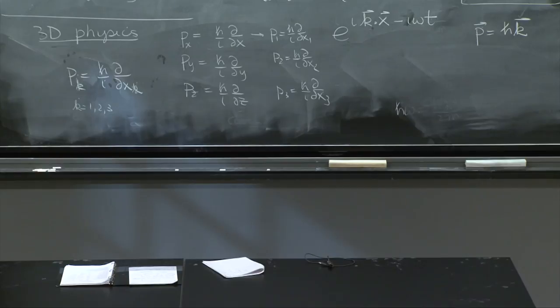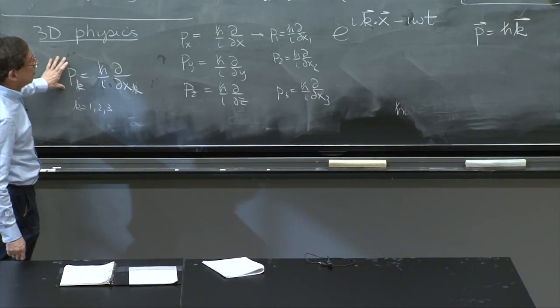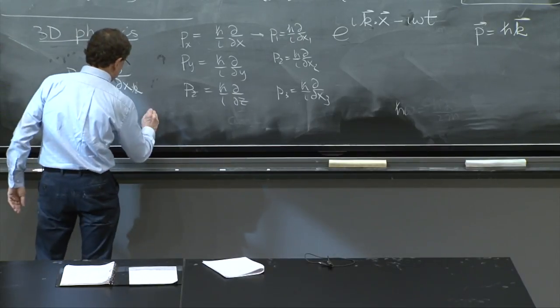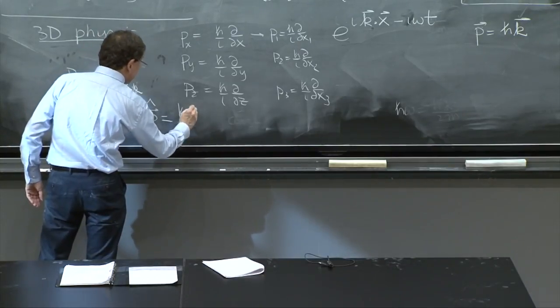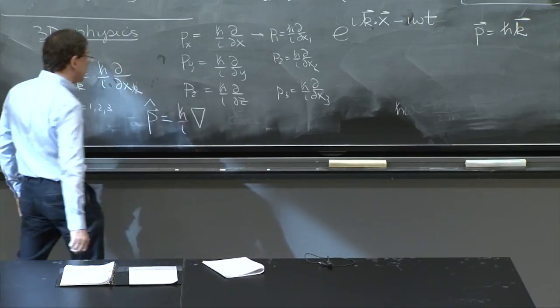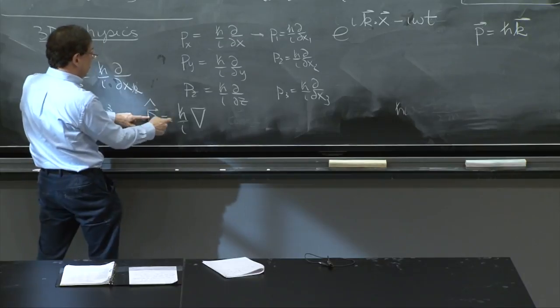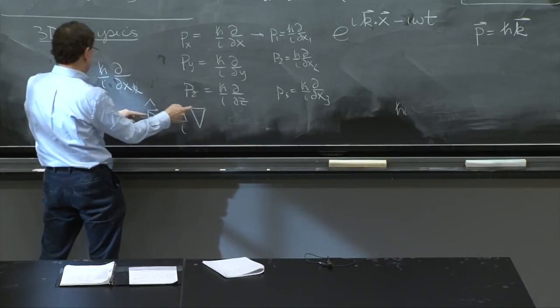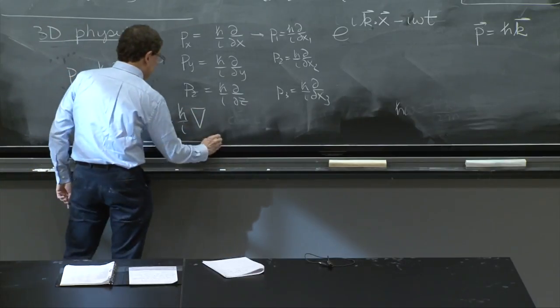So that's the momentum, there are three momenta. There are three coordinates. In vector notation, the momentum operator would be h bar over i times the gradient. You know that the gradient is a vector operator, because d dx, d dy, d dz. So there you go. The x component of the momentum operator is h bar over i d dx, or d dx1, d dx2, d dx3. So this is the momentum operator.